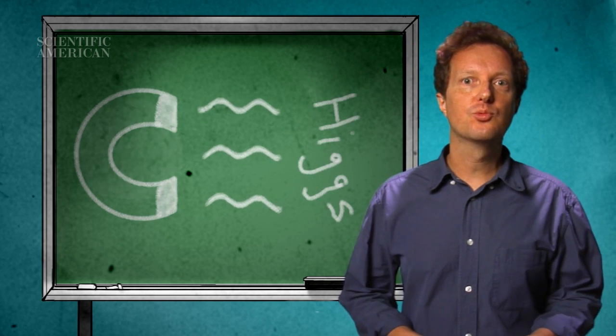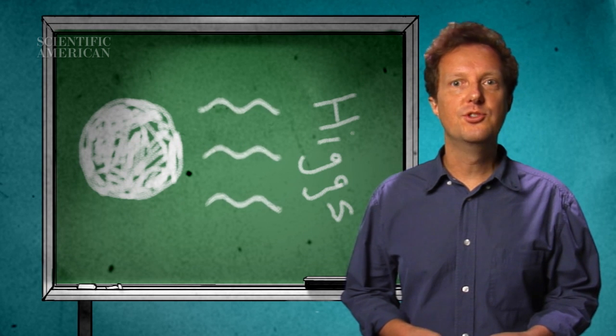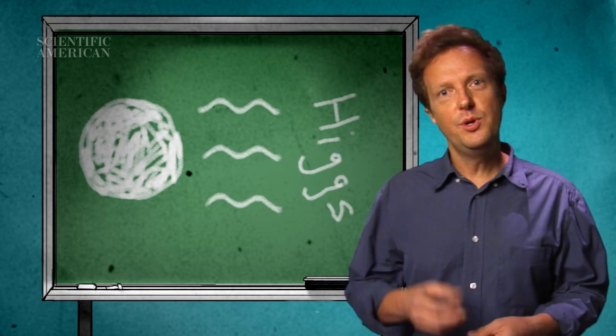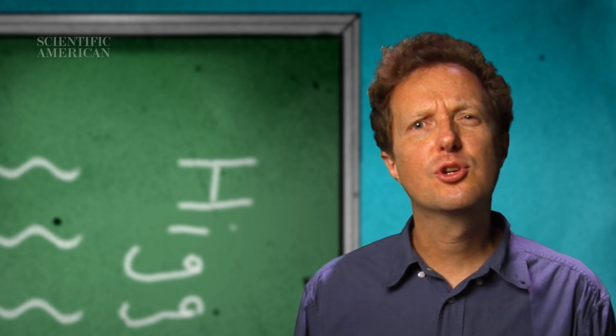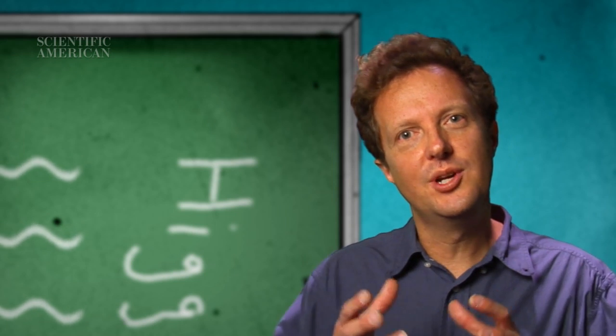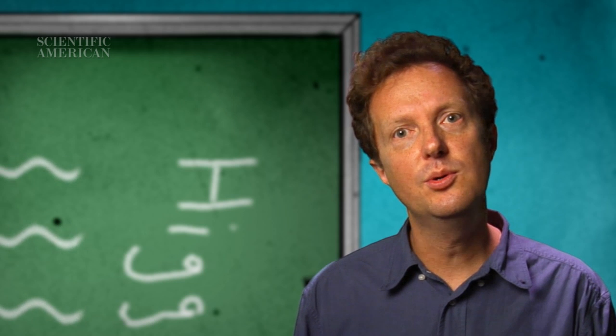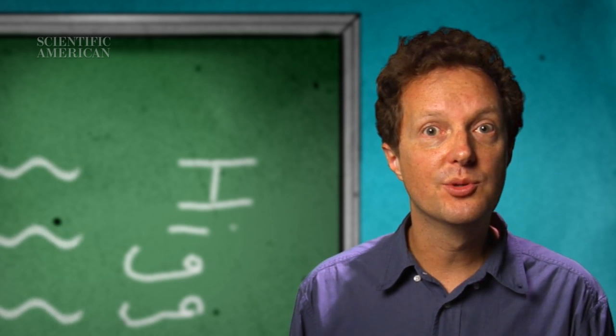The Higgs condensate blocks a close relative of magnetism known as the weak nuclear force. The weak force and electromagnetism are symmetrical counterparts. The Higgs cloaks their symmetry. It bottles up the weak nuclear force inside atomic nuclei and lets electromagnetism roam free.